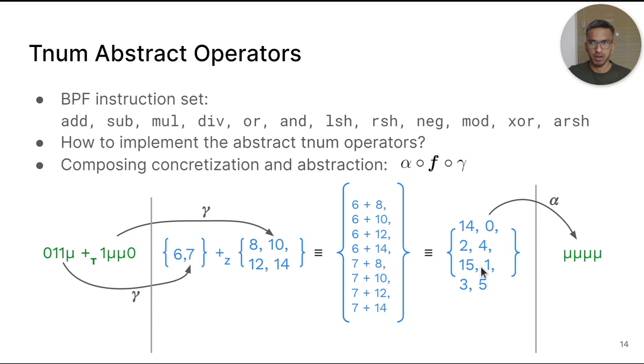This is infeasible to do in practice. There will be 2 raised to 2N pairwise additions in the worst case, and it defeats the purpose of approximation using abstractions. So, we need to define abstract operators that operate on the abstract values directly without generating these intermediate concrete set of values.